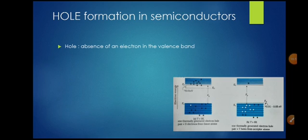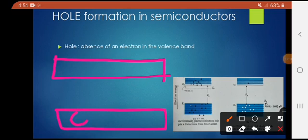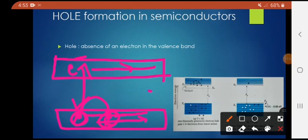A hole is the absence of an electron in the valence band. When an electron jumps from the valence band to the conduction band, it leaves a hole. A neighboring electron then jumps to occupy that hole and leaves a hole in its original position. So holes are moving in one direction and electrons are moving in the opposite direction.